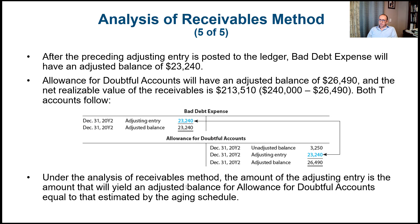Under the analysis of receivables method, the amount of the adjusting entry is the amount that will yield an adjusted balance for allowance for doubtful accounts equal to the estimate from the aging schedule. Let me stop here — in the next video we'll continue our discussion. Thank you.